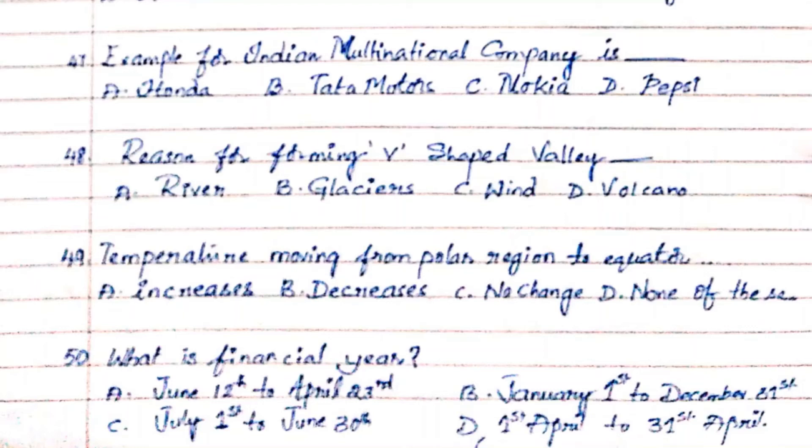Question 48: Reason for forming a V-shaped valley. Option A. River, Option B. Glaciers, Option C. Wind, Option D. Volcano. The answer is Option A. River.